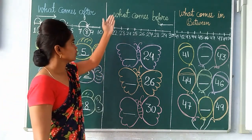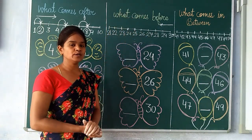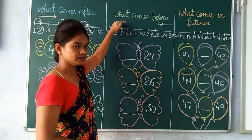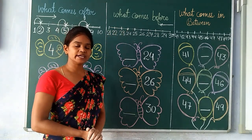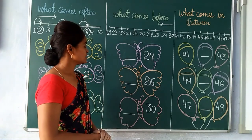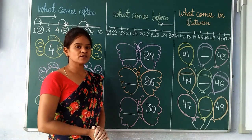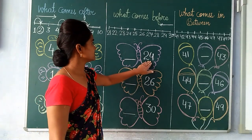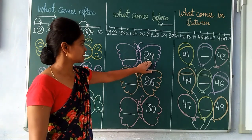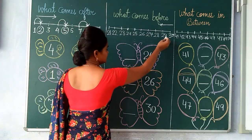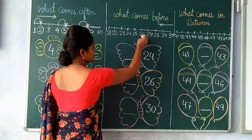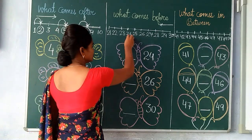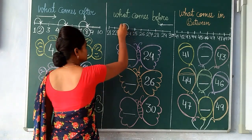Next is, what comes before? What do you mean by before number? When we count backward from the given number, we get the number before. Let's count backward from the number 24: 30, 29, 28, 27, 26, 25, 24. What comes before 24? Yes, it comes 23.